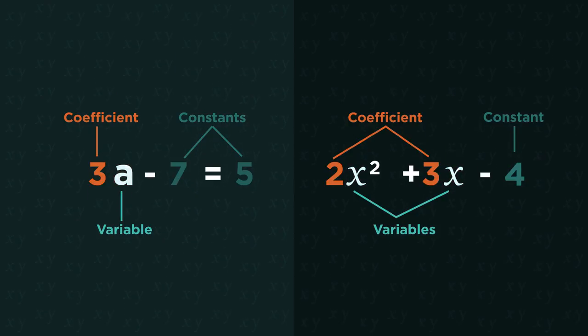A variable is a symbol for a number we don't know yet. It's usually a letter. A number on its own is called a constant. And then, the numbers in front of variables. These are called coefficients.